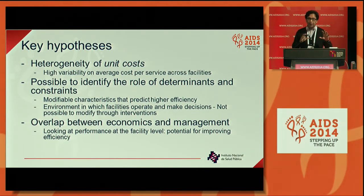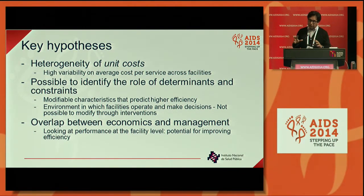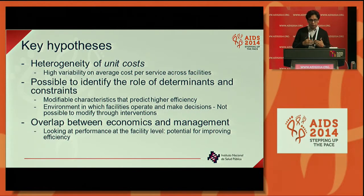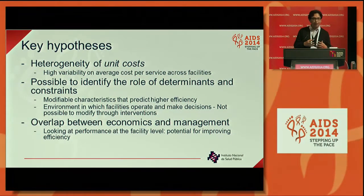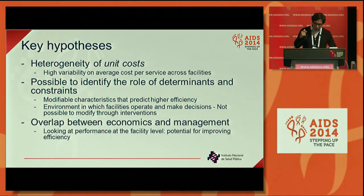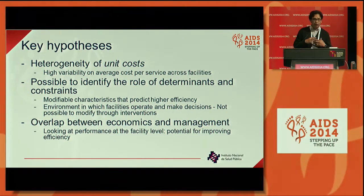This distinction is important. Determinants are facility-level characteristics that predict more efficient behavior — specifically modifiable things that can change across facilities and toward which interventions can be focused. Constraints, by contrast, are characteristics that are also important determinants of efficiency but cannot be changed; facilities have to operate with those constraints. The third hypothesis was that looking at facility-level performance would allow us to learn and provide recommendations.